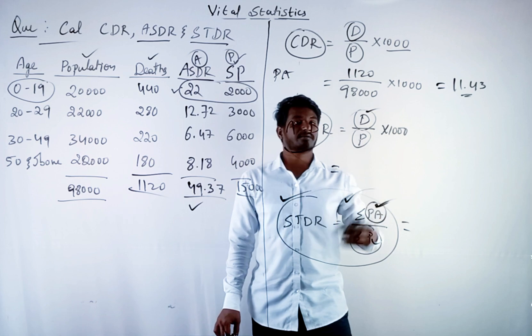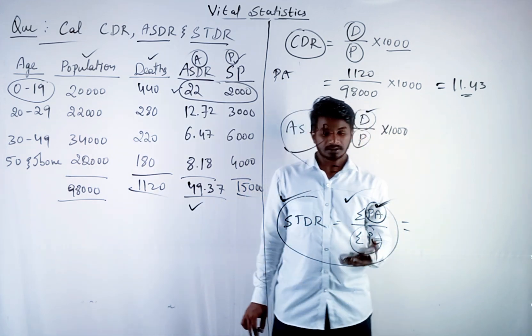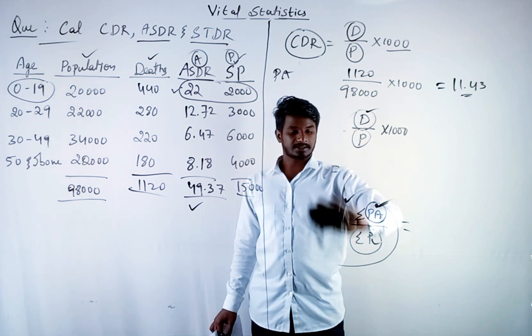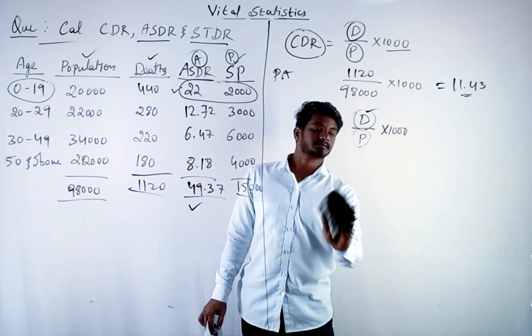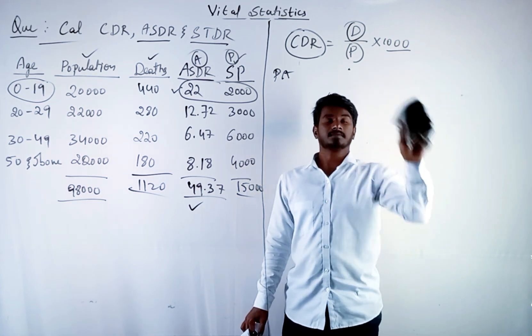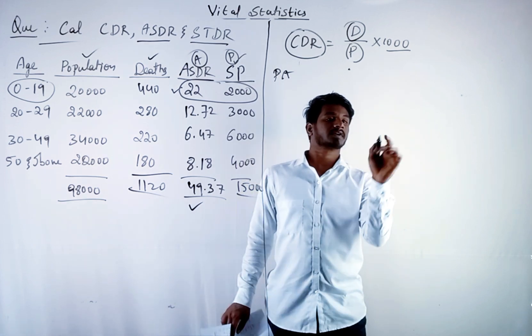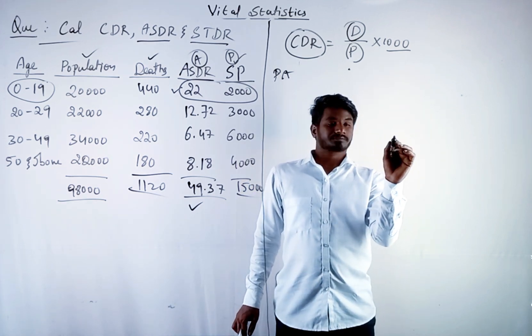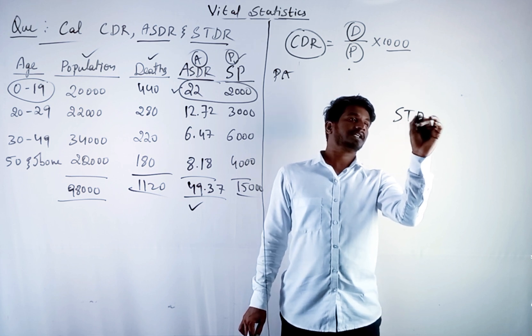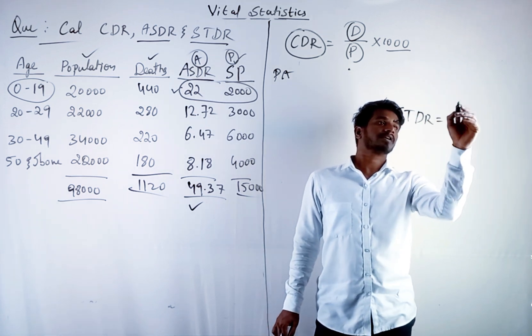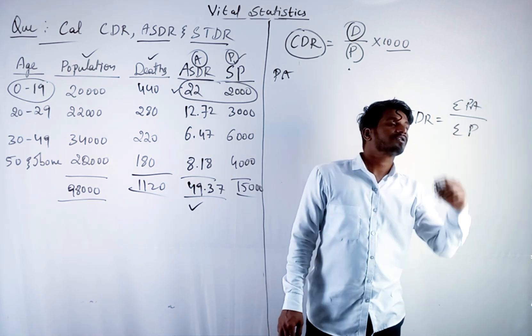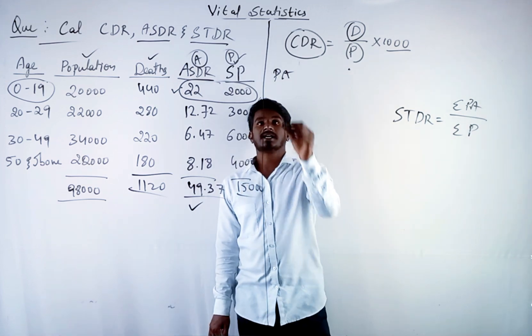I hope you have taken down the formulas. I need some space here, I am erasing it. The formula was STDR equals summation PA divided by summation P. This was the formula. Let us calculate.